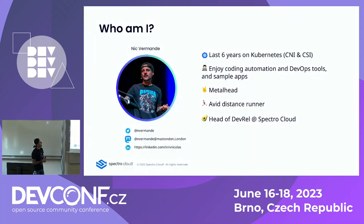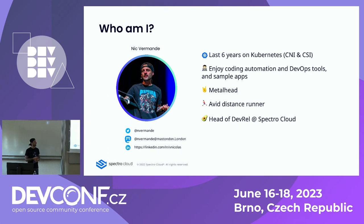My name is Nick. I'm heading the DevRel team at Spectral Cloud. I've been working with Kubernetes for the last six years — doesn't make me younger — both on the CNI, so more the network side, when I was at Cisco, and CSI. I worked for a company called Ondat, or StorageOS — distributed storage for Kubernetes, essentially.